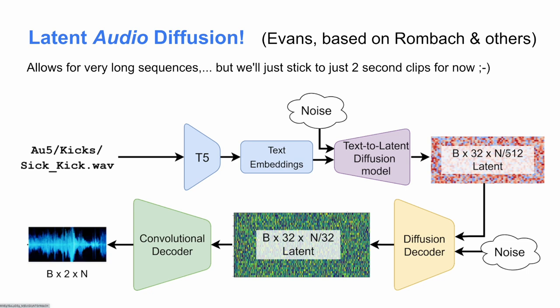Similar to Jukebox, which had different encodings for different timescales, we have a long-timescale representation that feeds into a diffusion decoder, which generates another kind of latent spectrogram covering shorter times — kind of like a short-time Fourier transform but in embedding space. Finally, we decode that with a convolutional decoder from an ordinary autoencoder to get our audio output. This allows us to handle very long sequences.